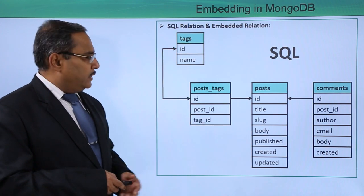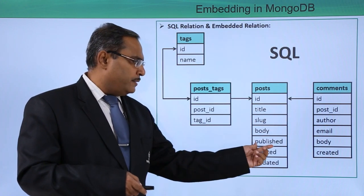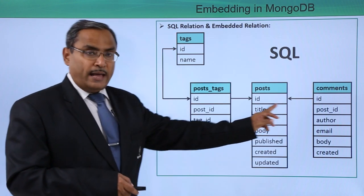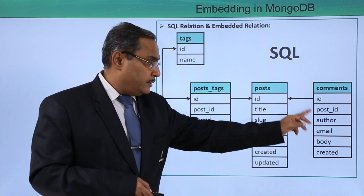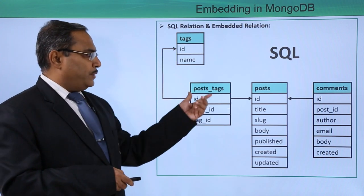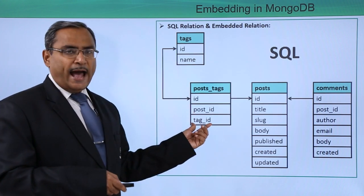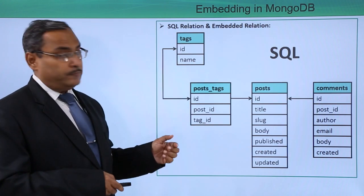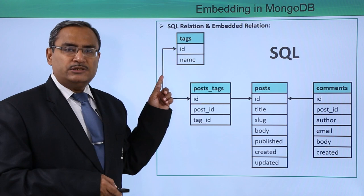Consider this case study. There is one post having fields: post id, title, slug, body, published, created, and updated. Against this post, we have multiple comments with fields: id, post id, author, email, body, and created — related via the id. Against this post, we also have multiple post tags with id, post id, and tag id, and respective tags containing id and name. So in a SQL relational database, we would create this kind of database structure.